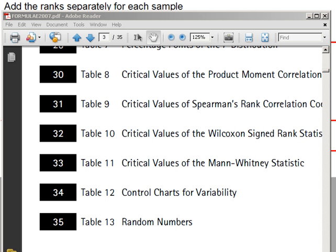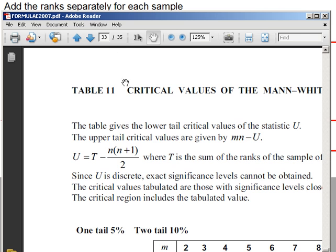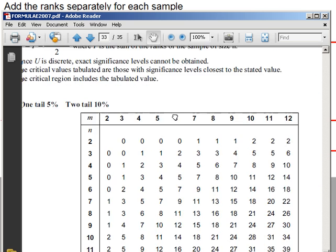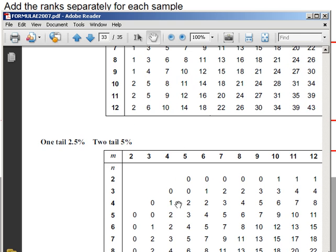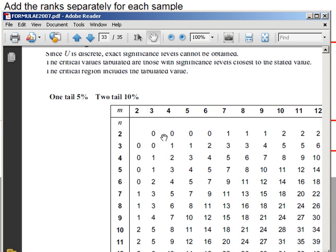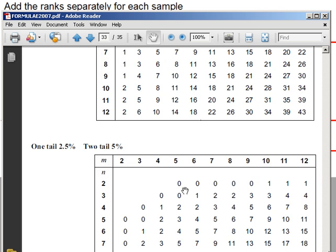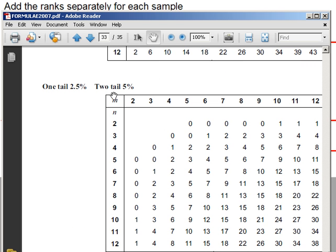Now we need to go to the tables. Critical values of the Mann-Whitney statistic, table 11, page 33. There are two tables here, so determine whether you're doing a one tail test at the 5% level or a two tail test at the 10% level, that's this table here, or whether you're doing one of these, that's this table here.